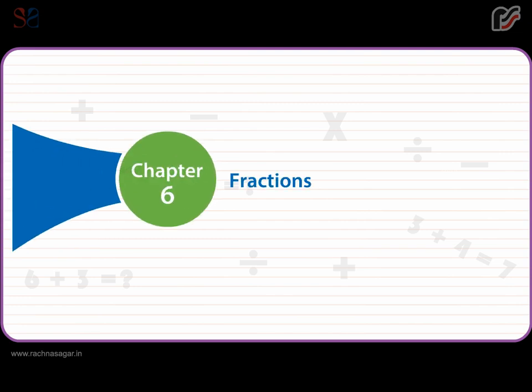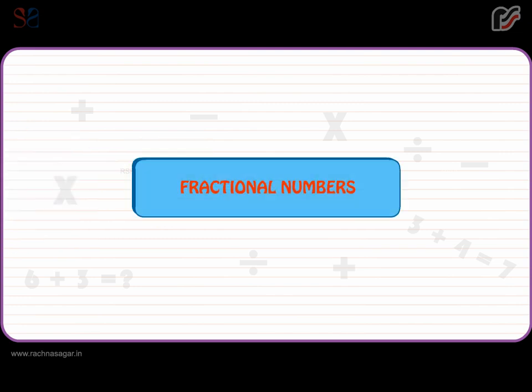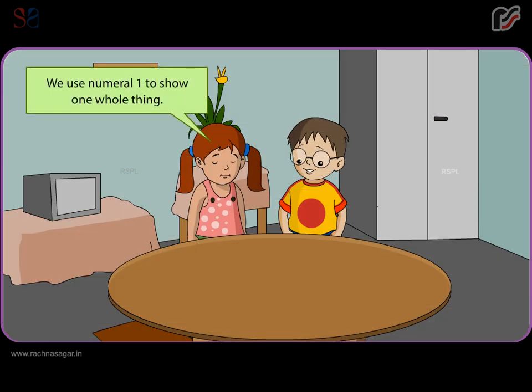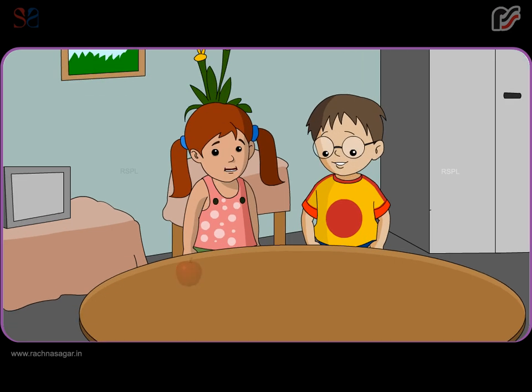Chapter 6: Fractions. Fractional Numbers. One Whole. We use numeral 1 to show one whole thing. For example: